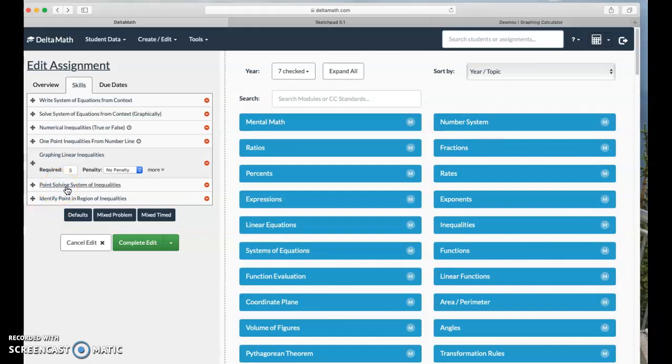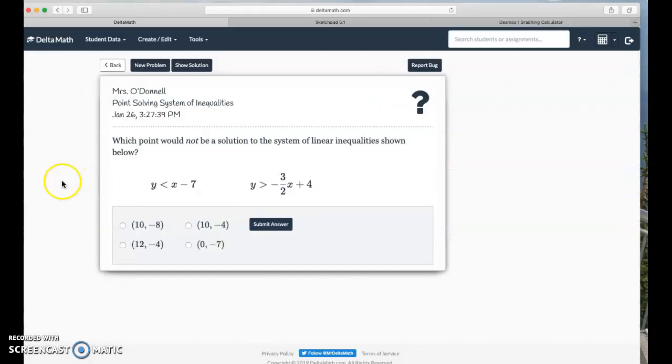Point-solving system of inequalities. All right, so all you're doing here is determining which point would not be a solution to the system of linear inequality shown below. And the easiest way to do that is just to plug them in and see if you have a true statement or not.